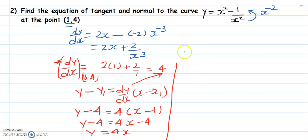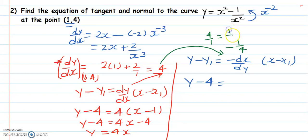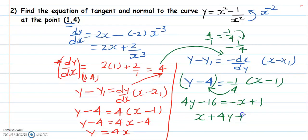For the equation of normal: y minus y1 equals negative reciprocal of 4 times x minus x1. Negative reciprocal of 4 is minus 1 over 4. y minus 4 equals minus 1 over 4 times x minus 1. Multiply through by 4: 4y minus 16 equals minus x plus 1. Bringing x to this side: x plus 4y minus 17 equals 0. This is the equation of normal, and y equals 4x is the equation of tangent.